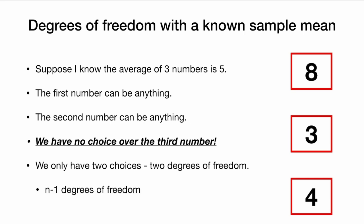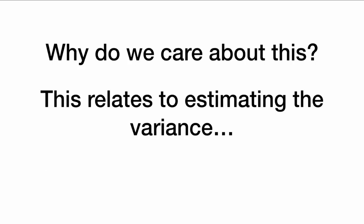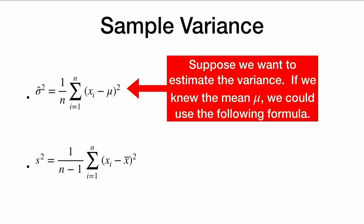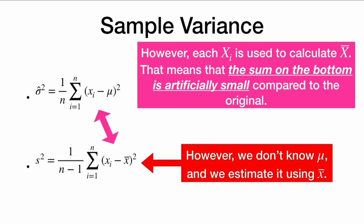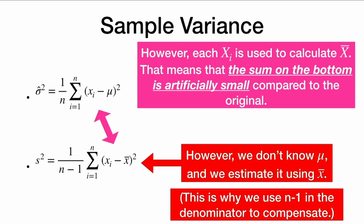So we have n minus one degrees of freedom, n being the sample size of three here. This relates to estimating the variance. If we knew the true mean mu, we could use that formula to estimate the variance. But we often don't know mu, so we estimate it with the sample mean. However, each data point xi is actually used to calculate x-bar, which means each xi is closer to x-bar than we'd expect. So the sum is artificially small compared to using the true mean, and this is why we use n minus one in the denominator of variance — to compensate and make it an unbiased estimator.